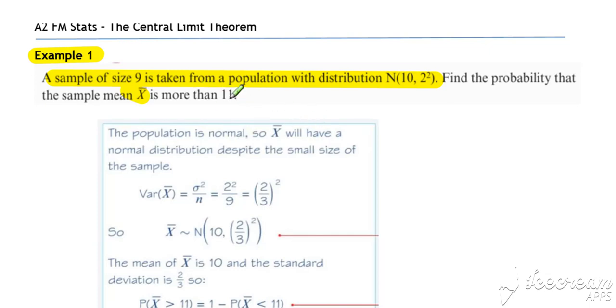So our sample size n is 9, mu is 10, sigma is 2, and we want to work out the probability that x bar is more than 11.